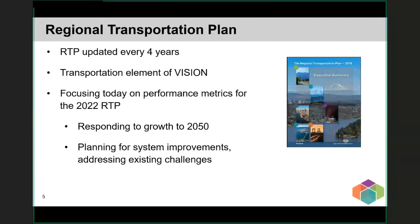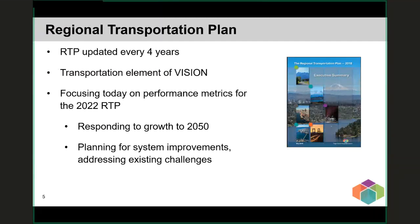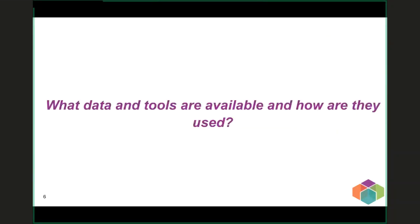We're going to spend some time today talking about performance metrics for the Regional Transportation Plan, which we update every four years. The RTP is essentially the transportation element of Vision — our long-range policy framework for the region. We are beginning the next RTP to be adopted in 2022, which will respond to growth expected through 2050 and address current and future transportation system needs and challenges.